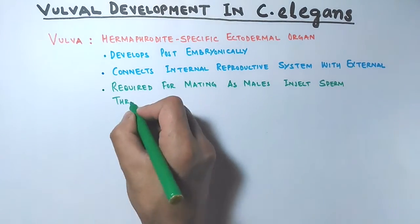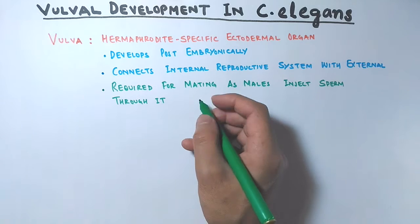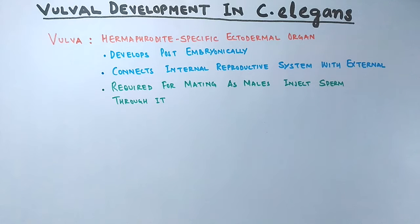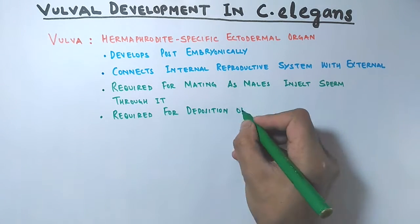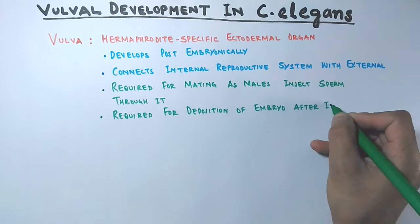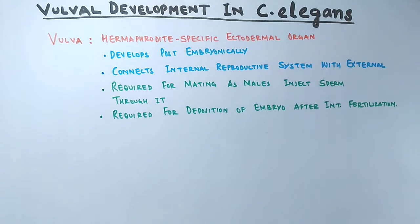Do not get confused here, because the vulva-containing C. elegans is a hermaphrodite organism, but in some cases cross-fertilization is seen where the vulva is required so that males are able to inject sperm through it. The other important function is that it is required for deposition of embryos after internal fertilization. These are the two main functions of the vulva.